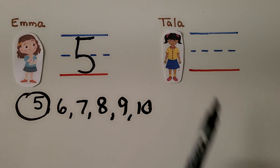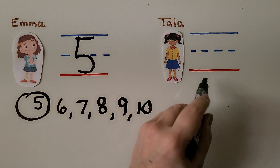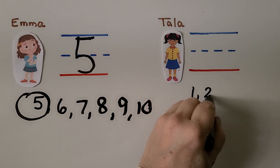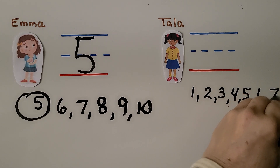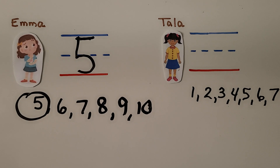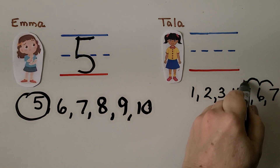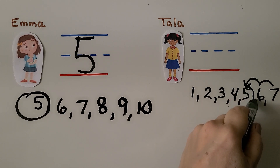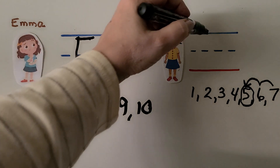Now for Tala. She has a number of cookies that is two less than seven. What number is two numbers before seven? In counting order: one, two, three, four, five, six, seven. Here's one number before seven, and here's two numbers before. She must have five. Five is two numbers before seven in counting order. We write the number five.